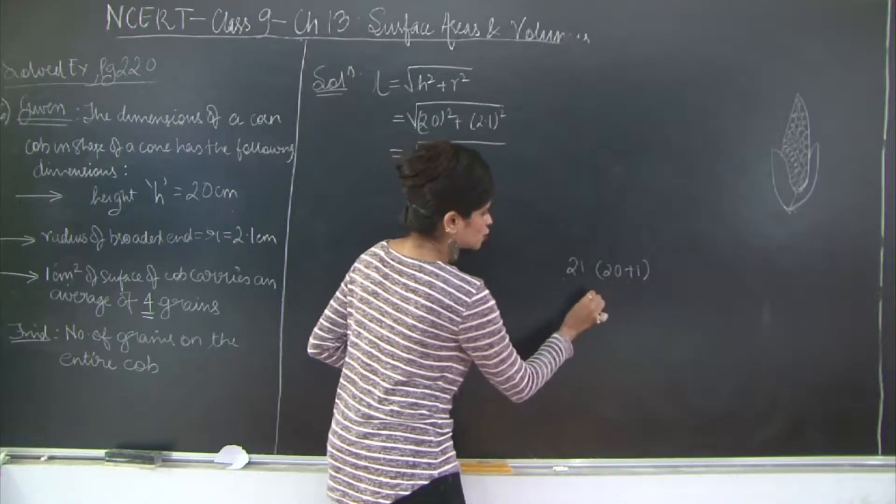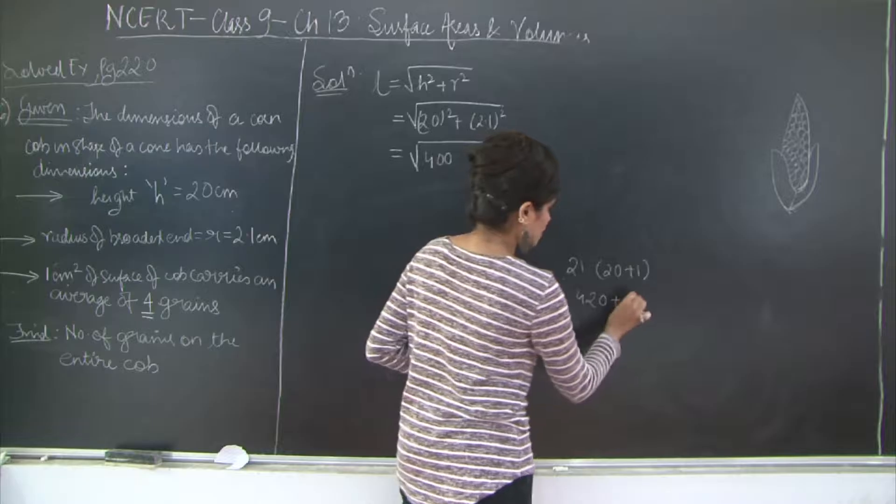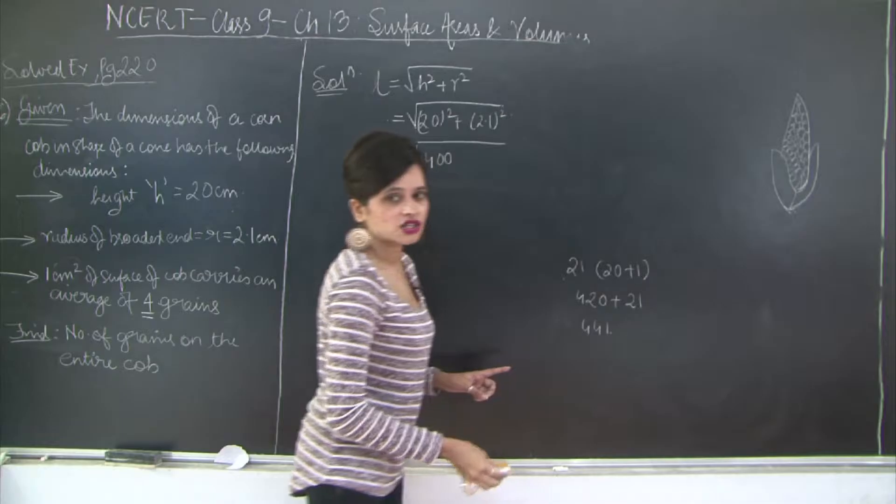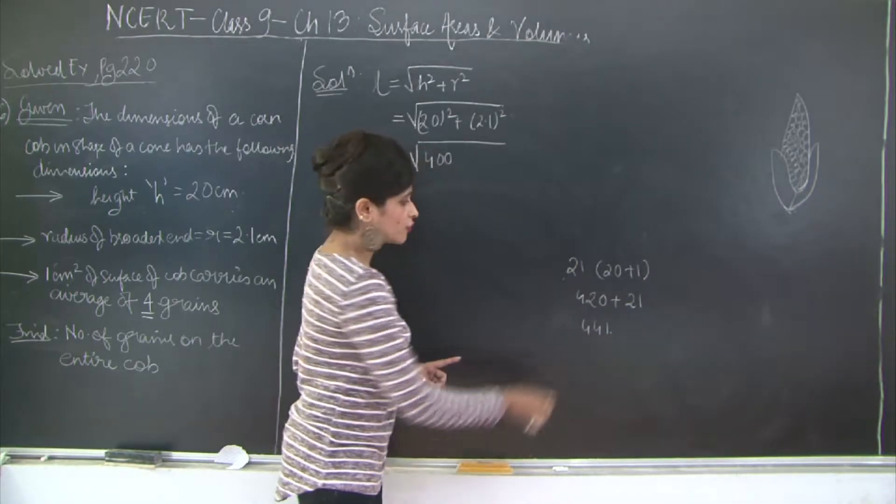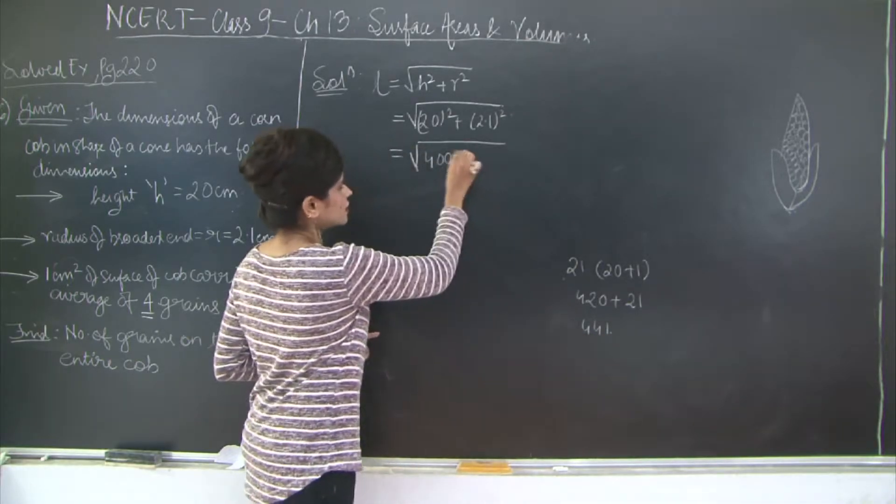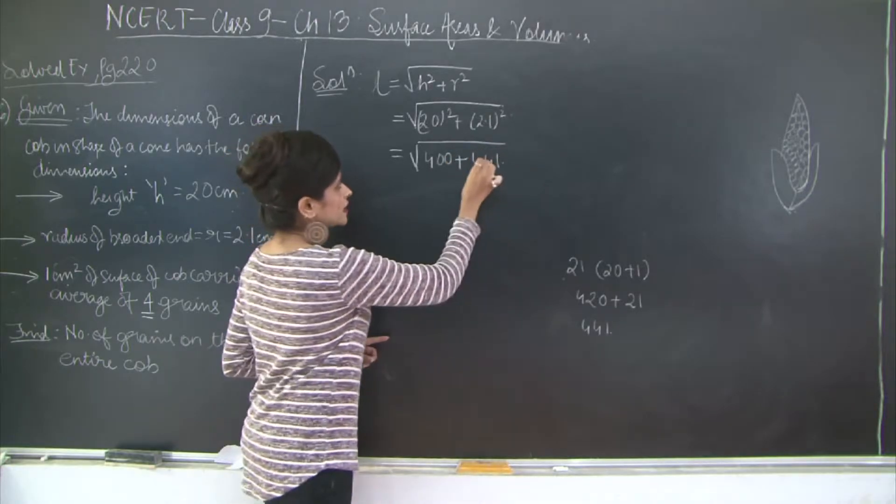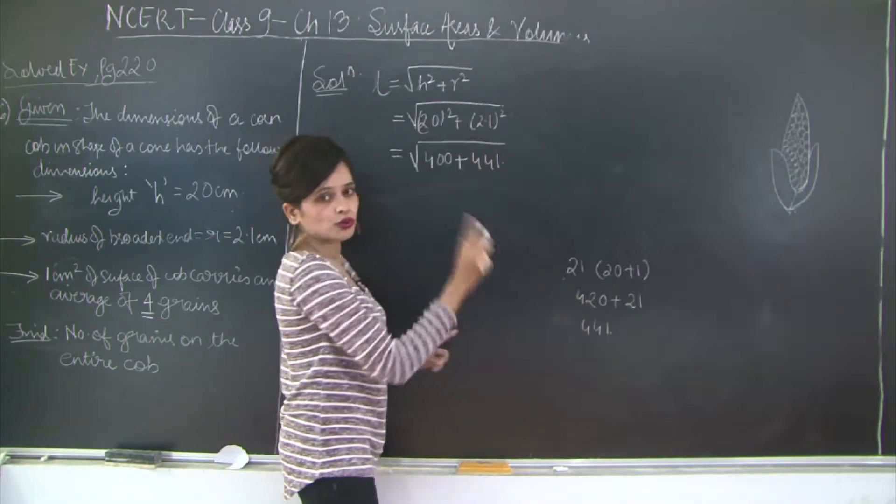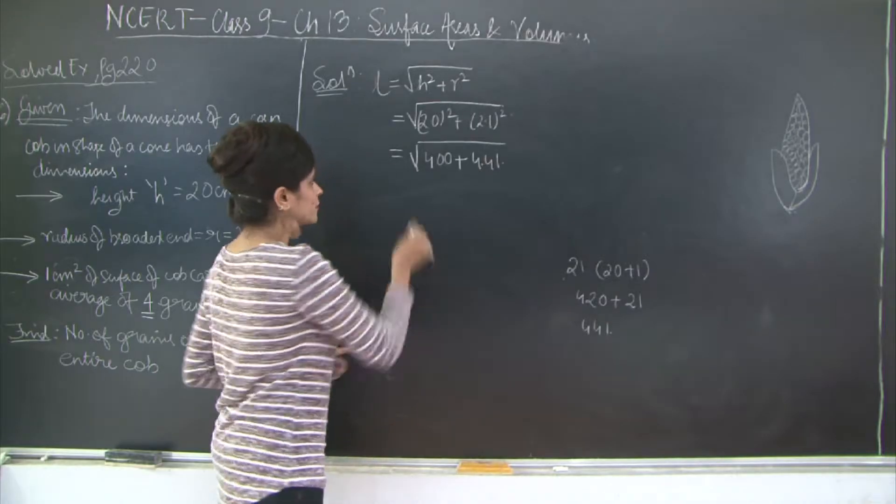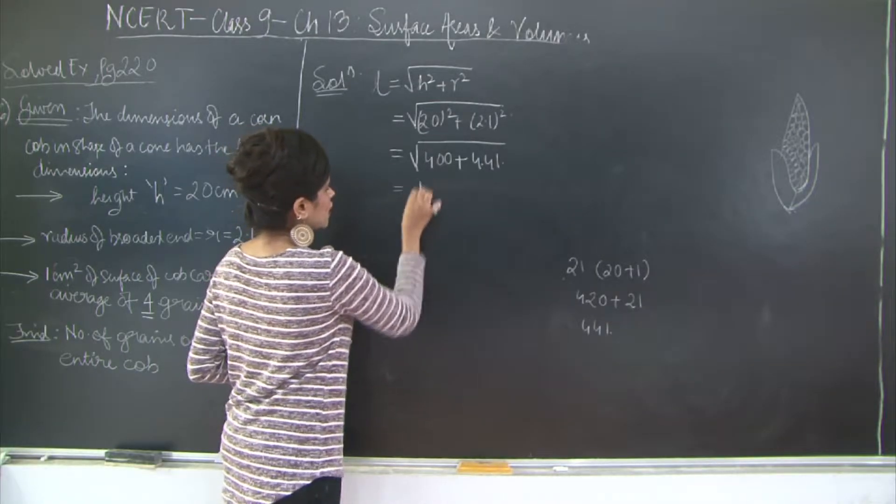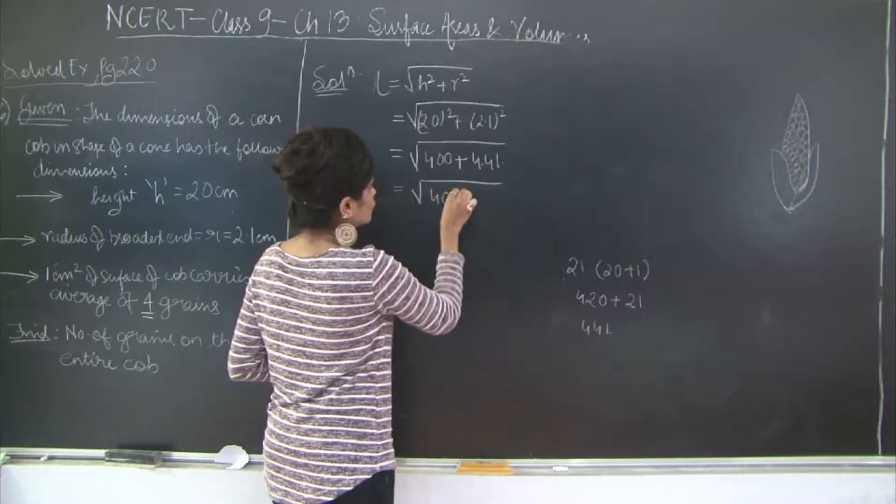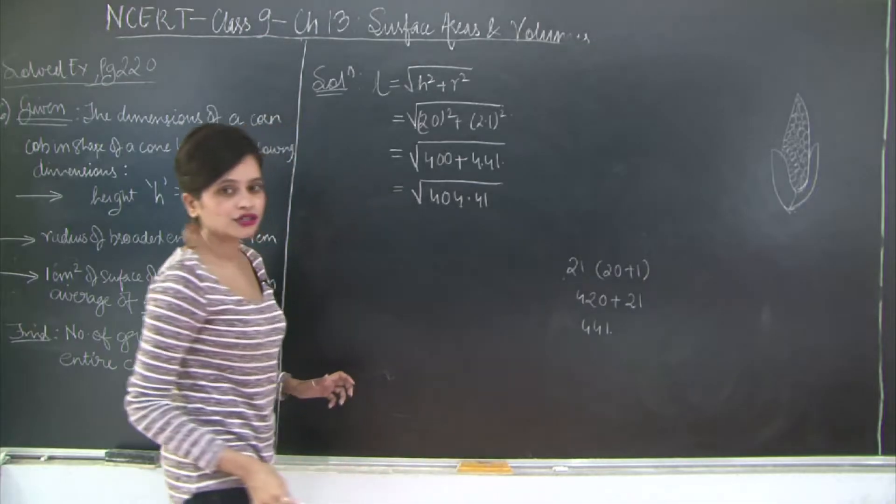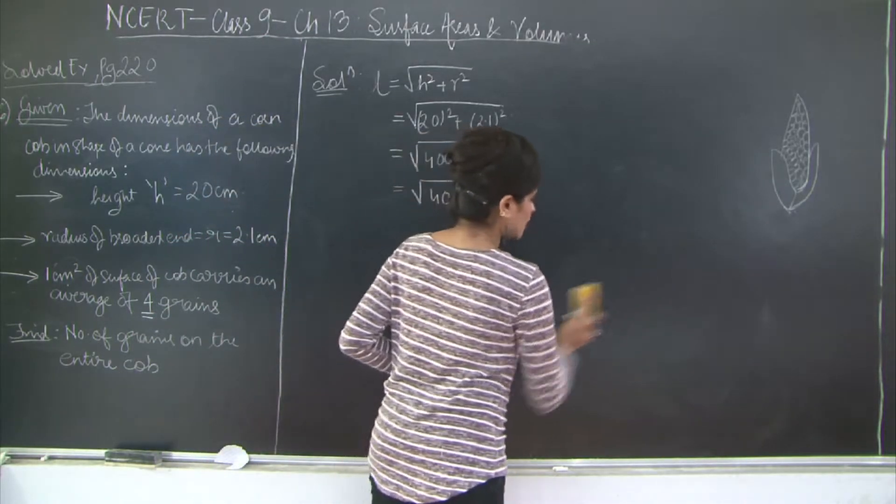So 21 into 21 can be written as 21 into 20 plus 1. So 2 ones are 2, 2 twos are 4, 420 plus 21. So this is going to be 441. But this is 2.1 into 2.1, so 2 decimal places, giving us 4.41. So this is going to be under root of 404.41. So we will have to find the square root of 404.41. Let's go ahead and find the square root.